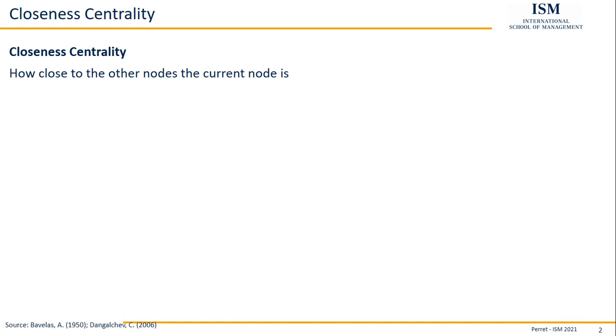In other words, if we have a node with a relatively high closeness, this means this node is not only connected to a lot of different other nodes, but it's also relatively near to all of these other nodes. So the shortest paths to a lot of other nodes are very short.